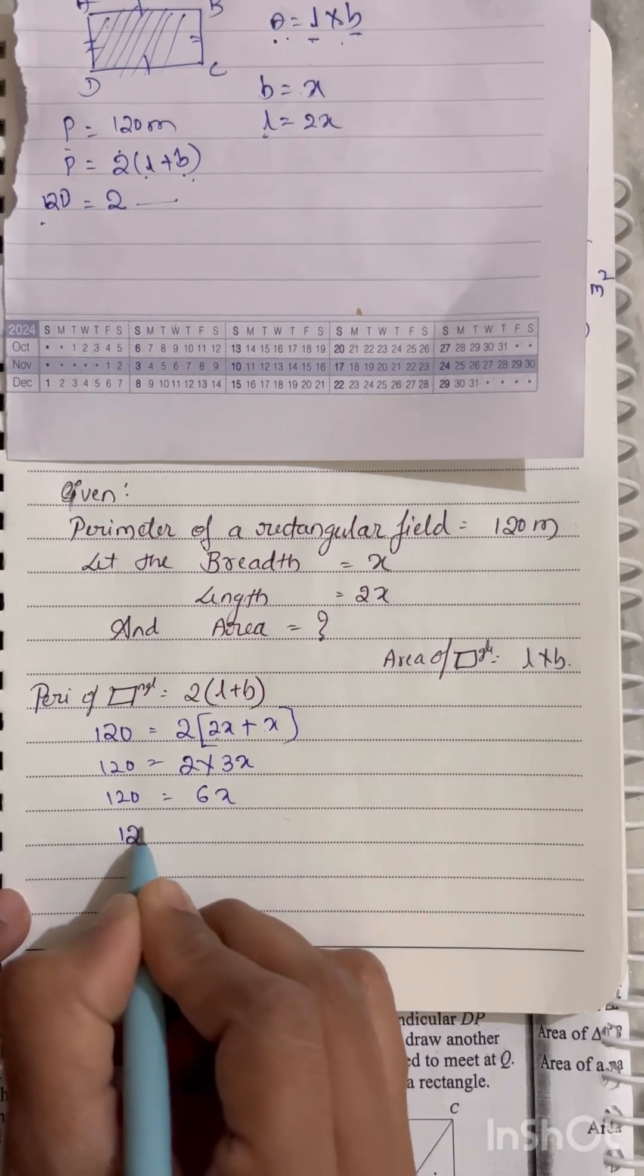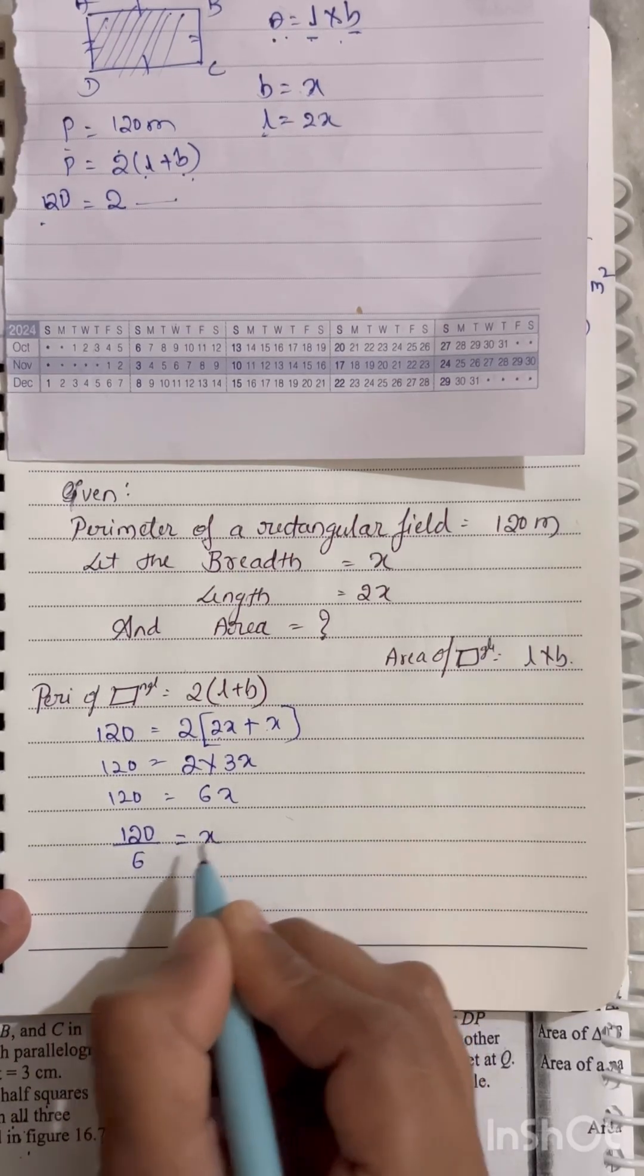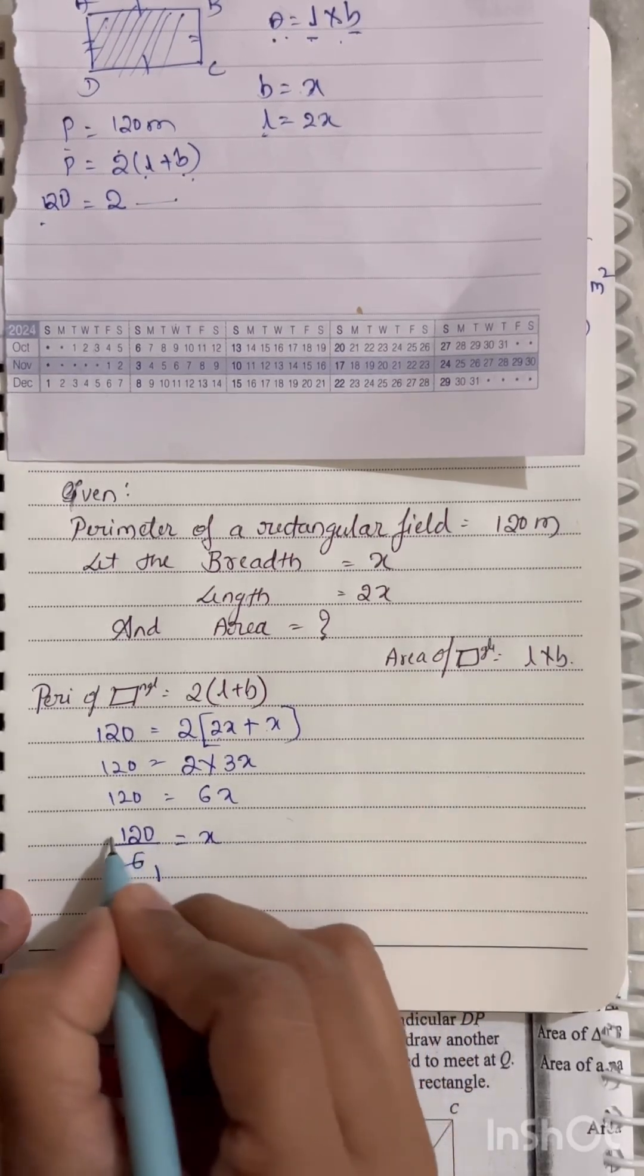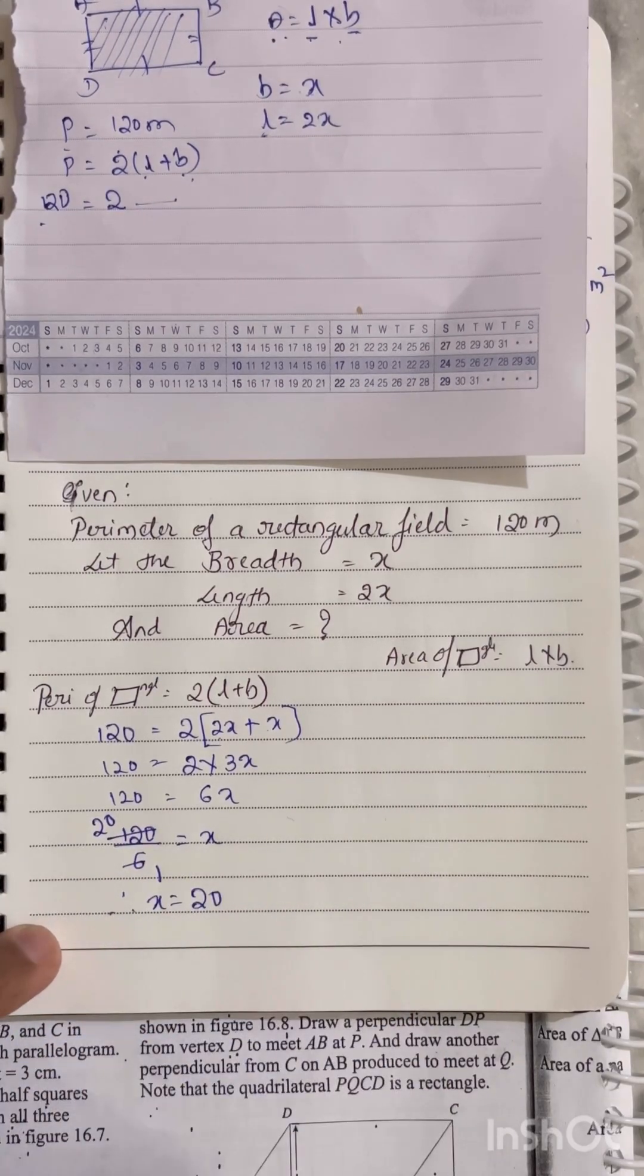Now 6 I will shift to the left side, so it will become in the form of division. That is 120 divided by 6 equals X. Now 6 into 1 is 6, 6 into 2 is 12, 0 as it is. It means X value we got, that is 20.